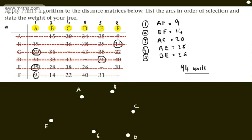So, what we can see is that we've got A to F. So, let's connect that up. A to F is going to have a weight of 9. We've got now B to F, which has got a weight of 14. We've got A to C, which has got now a weight of 20. We've got A to E, which has got a weight of 25. And then we've got D to E, which has a weight of 26.